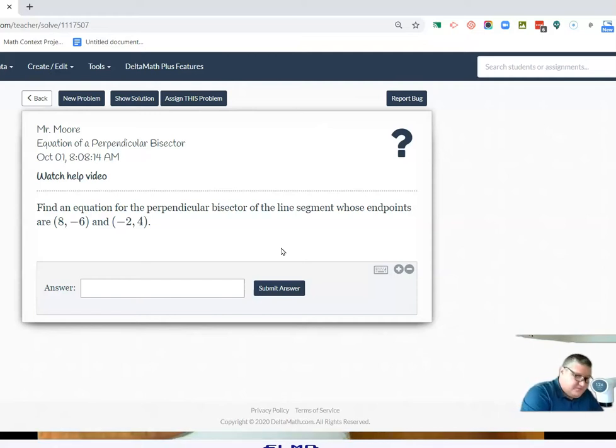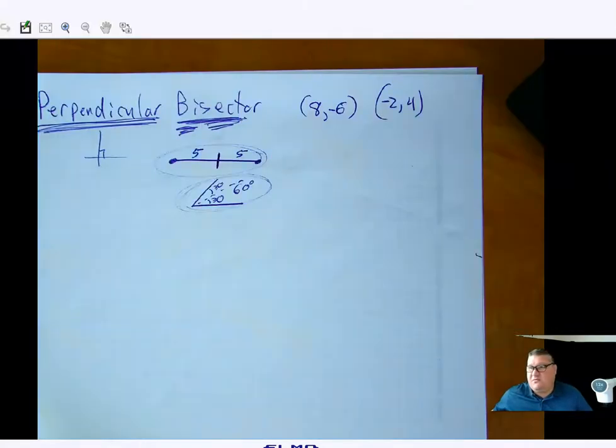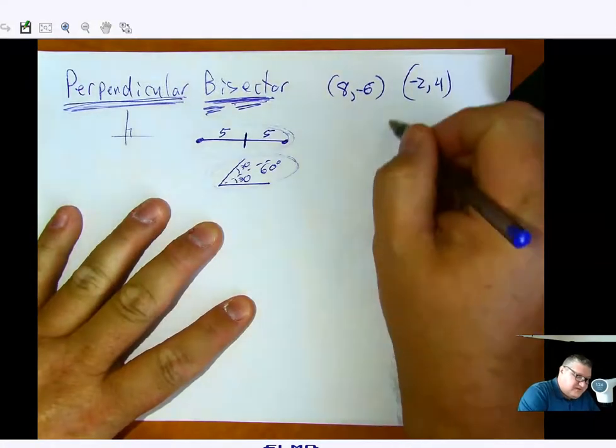So here we go. We need 8 comma negative 6 and we need negative 2 comma 4. Okay. So we know what we need. We'll put this over here. A perpendicular bisector.